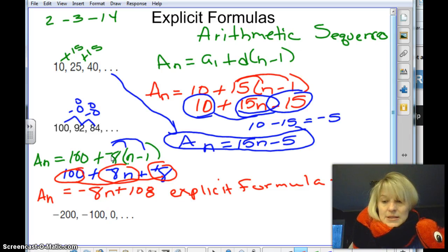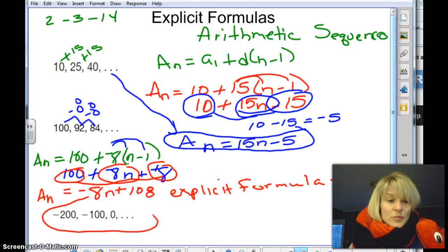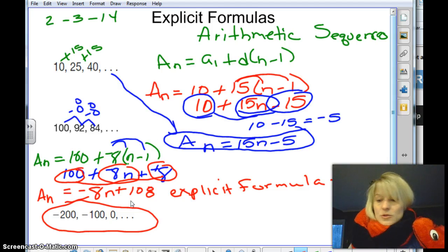So again, the biggest thing is the distributing, watching your signs. You need to know what a sub 1, d, and n stands for. So I would like for you to try this one on your own. Come in with the explicit formula. Look at the two examples if you're having trouble with it, but you should come in with something.